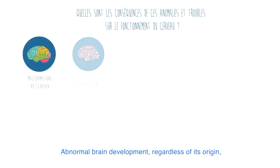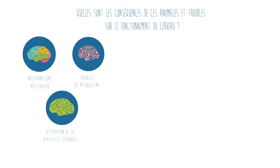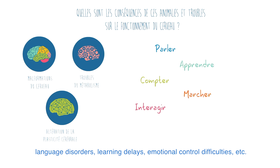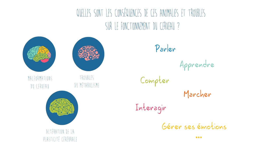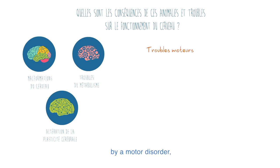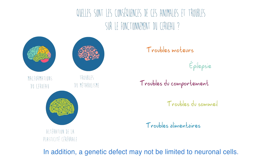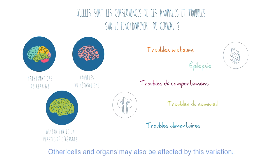Abnormal brain development, regardless of its origin, can lead to a spectrum of intellectual disability that is often accompanied by specific identifiable disorders: language disorders, learning delays, emotional control difficulties, etc. Intellectual disability can also be accompanied by a motor disorder, epilepsy, behavioral disorders, sleep disorders, or eating disorders. In addition, a genetic defect may not be limited to neuronal cells — other cells and organs may also be affected.